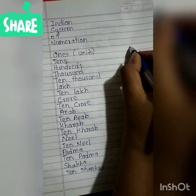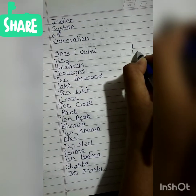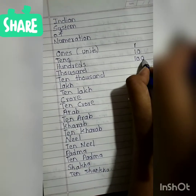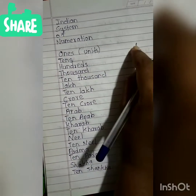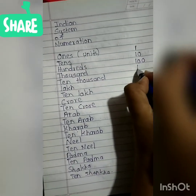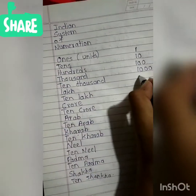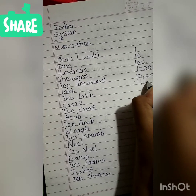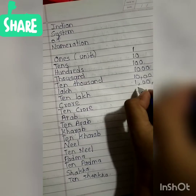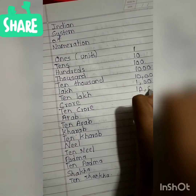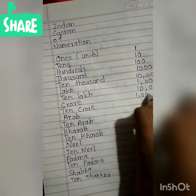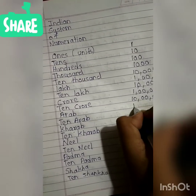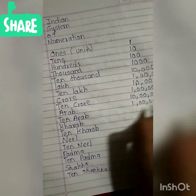For ones or units, you write 1. Tens is 10. Hundreds is 100. One thousand has three zeros. Ten thousand has four zeros. One lakh has five zeros. Then ten lakh, one crore, ten crore, one Arap, ten Arap — each step adds another zero going further up the Indian place value system.